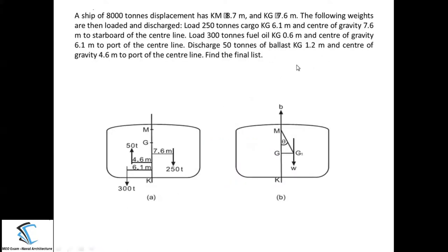Let us start one more numerical on the angle of list. In this numerical, more than one cargo is involved — some cargo is being loaded and some is being discharged. A ship of 8000 tons displacement has KM of 8.7 meters and KG of 7.6 meters.